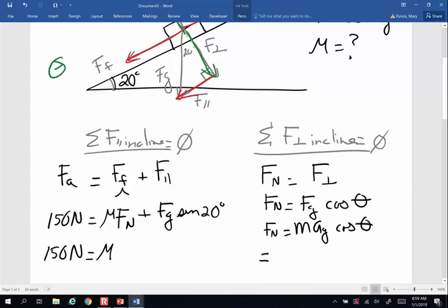In this case, mass is equivalent to 35 kilograms. Must remember the acceleration of gravity, 9.8 meters per second squared, and the cosine of 20 degrees.